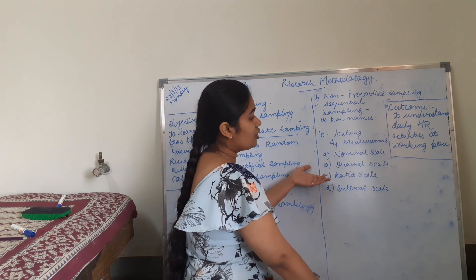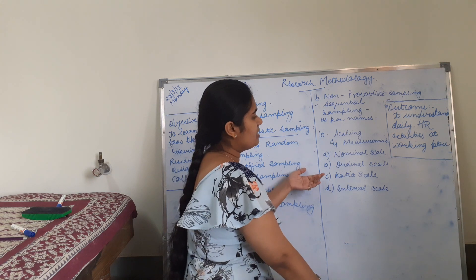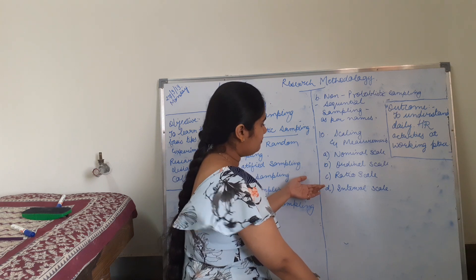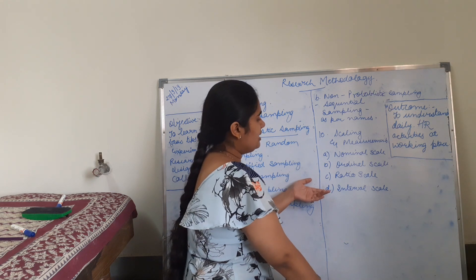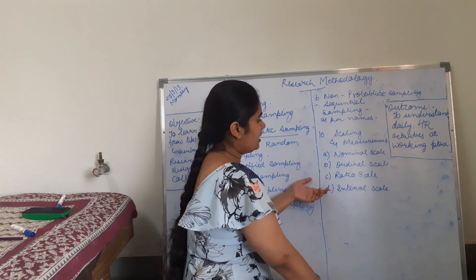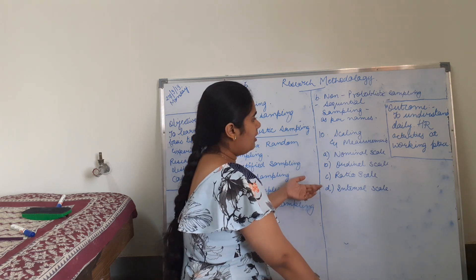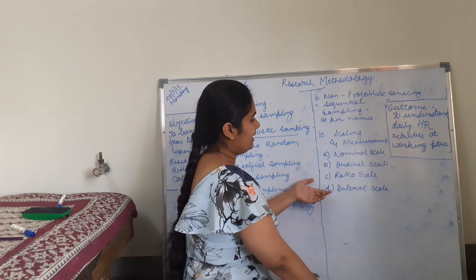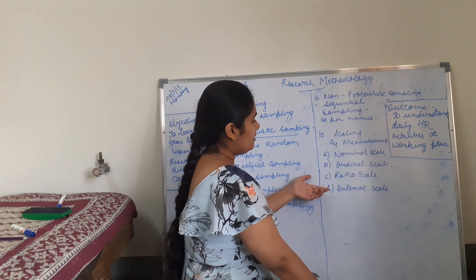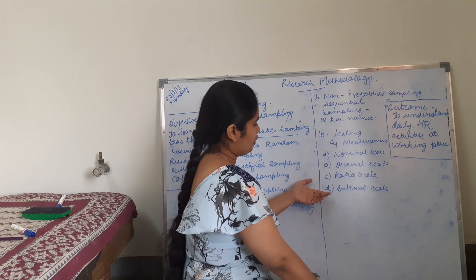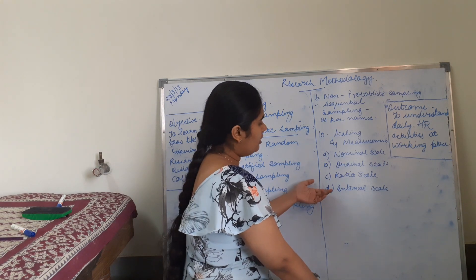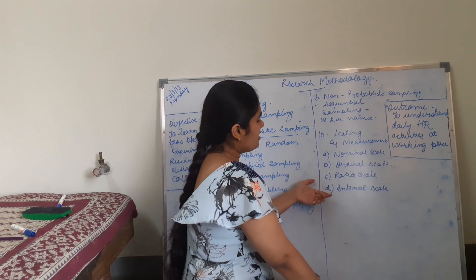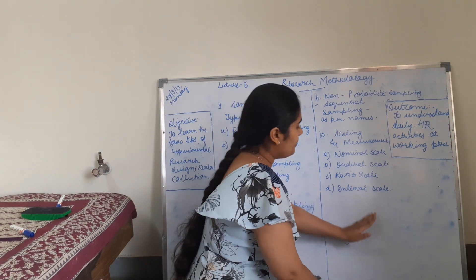Ratio scale — in it ratios are measured. For example, 1 is to 3 is the ratio of women to men. And interval scale — in it intervals are made. For example, class 1 to 8th is junior section, 8th to 10th is middle section, and then it is senior section. So how many marks did the junior section score in maths as compared to others — so intervals are being made.